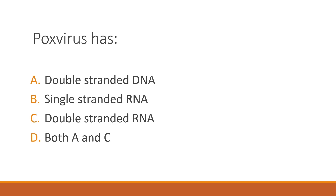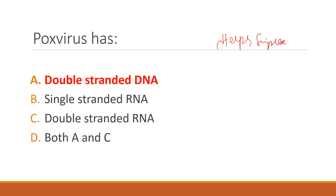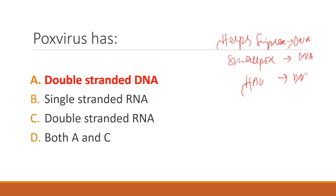Pox virus has which type of genetic material? The correct answer is option A: double-stranded DNA. A good way to remember this is that herpes simplex viruses are also DNA viruses, as are smallpox viruses. Pox viruses are DNA viruses; almost all other viruses mentioned are RNA viruses.